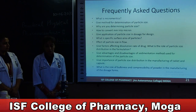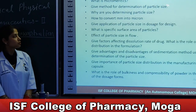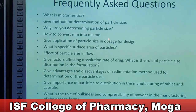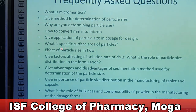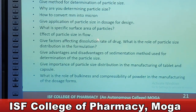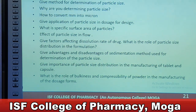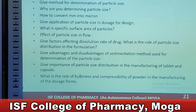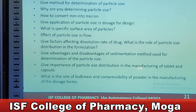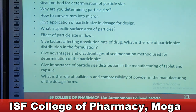Frequently asked questions for this experiment include: What is micrometrics? Give methods for determination of particle size. Why do we determine particle size? How to convert mm into microns? Give applications of particles in dosage form design. What is the specific surface area of particles? Effect of particle size on flow. Give factors affecting dissolution rate of the drug, bioavailability, distribution, solubility, and other parameters affecting particle size. Give advantages and disadvantages of microscopy, sedimentation, and other methods. Give the importance of particle size distribution in manufacturing of tablets and capsules. What is the role of bulkiness and compressibility of powder in manufacturing of solid dosage forms?